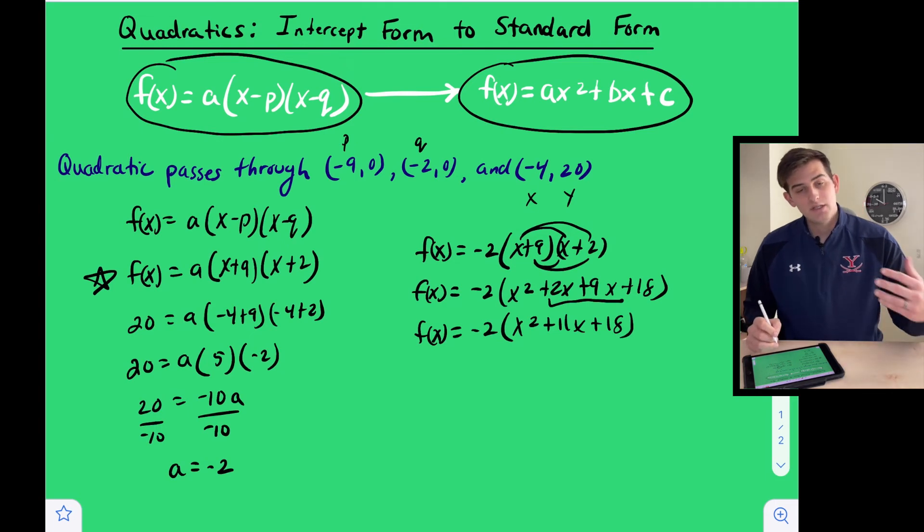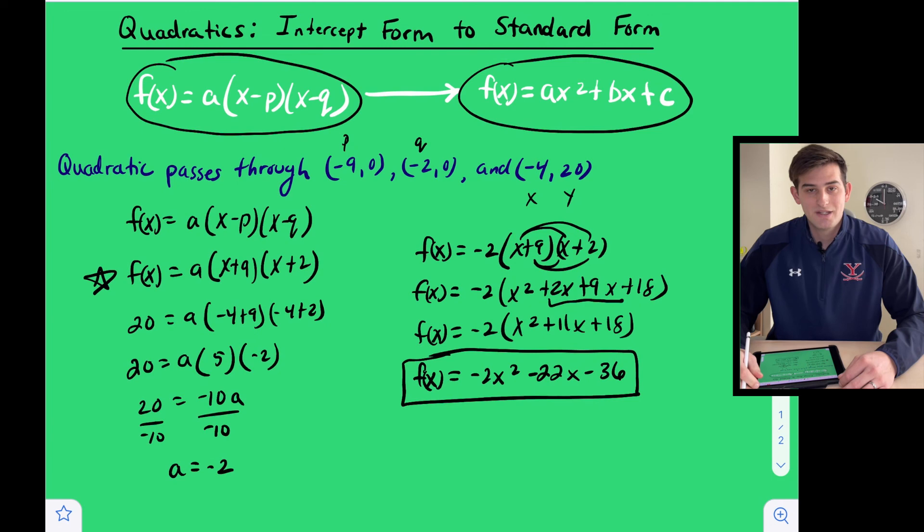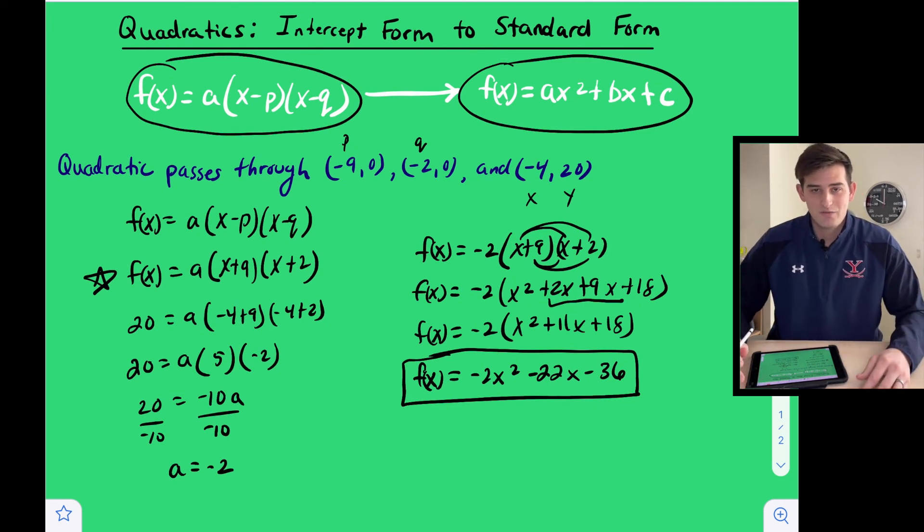And lastly, we can distribute this negative two to all three terms of our trinomial. So we get f of x equals negative two x squared minus 22x minus 36. And that would be our final equation that's in standard form. And so that's how you take a quadratic in intercept form and write it in standard form.